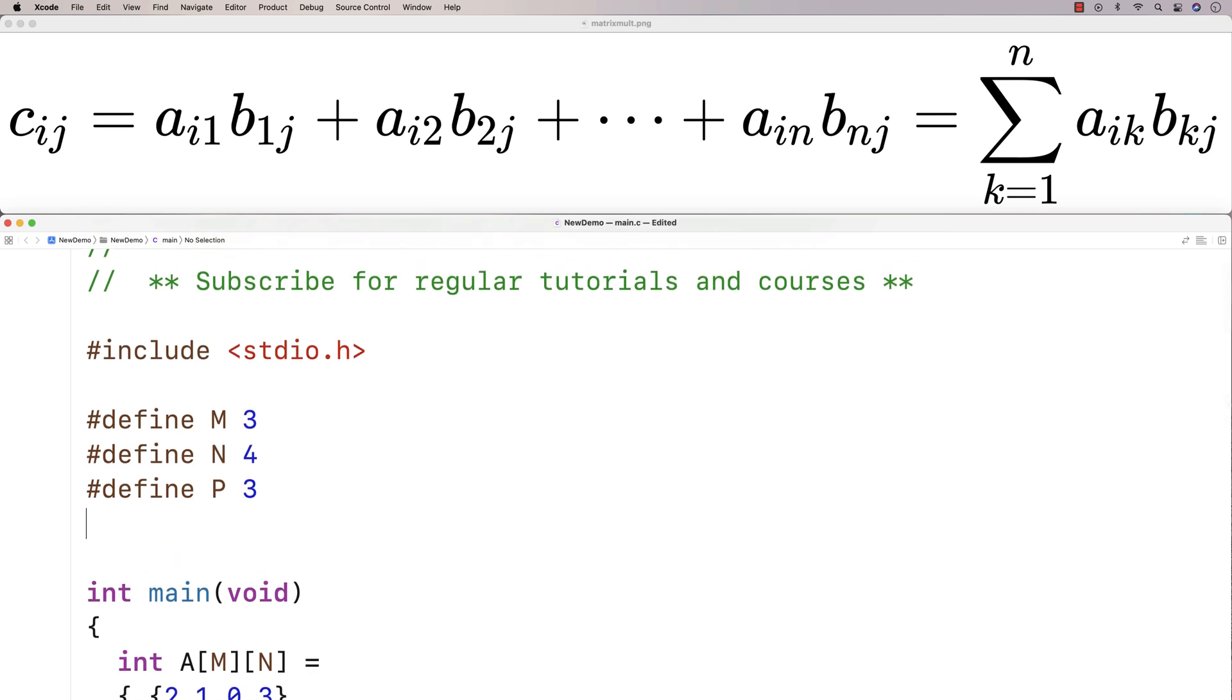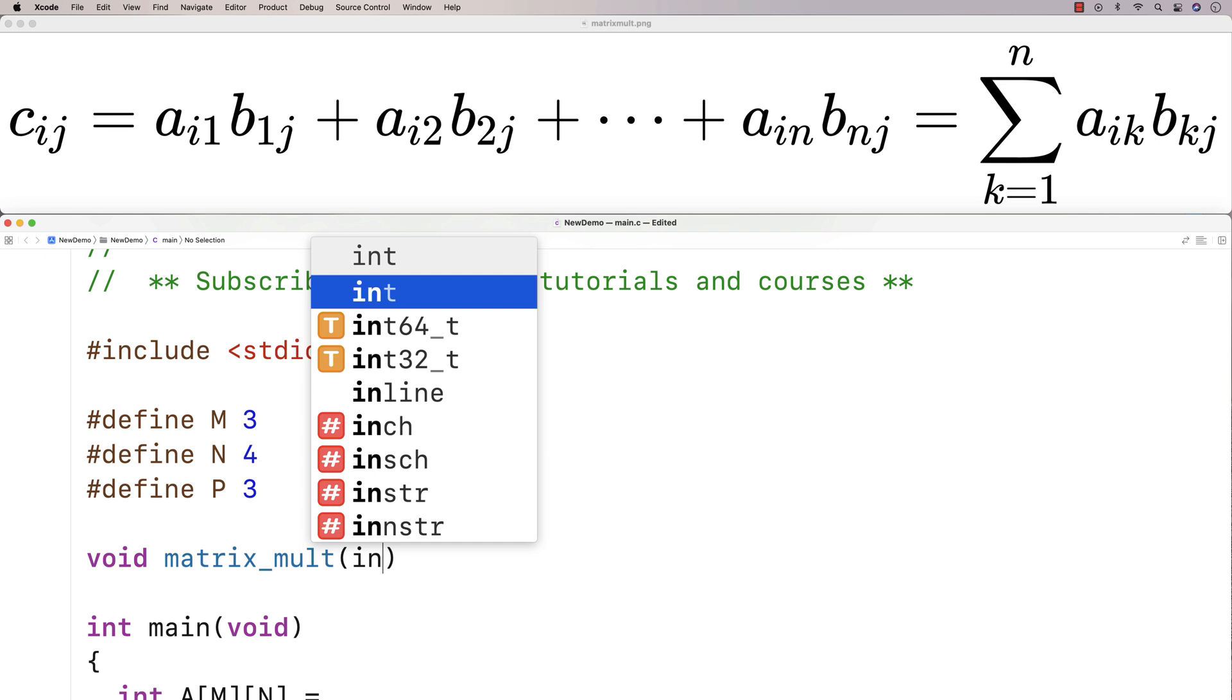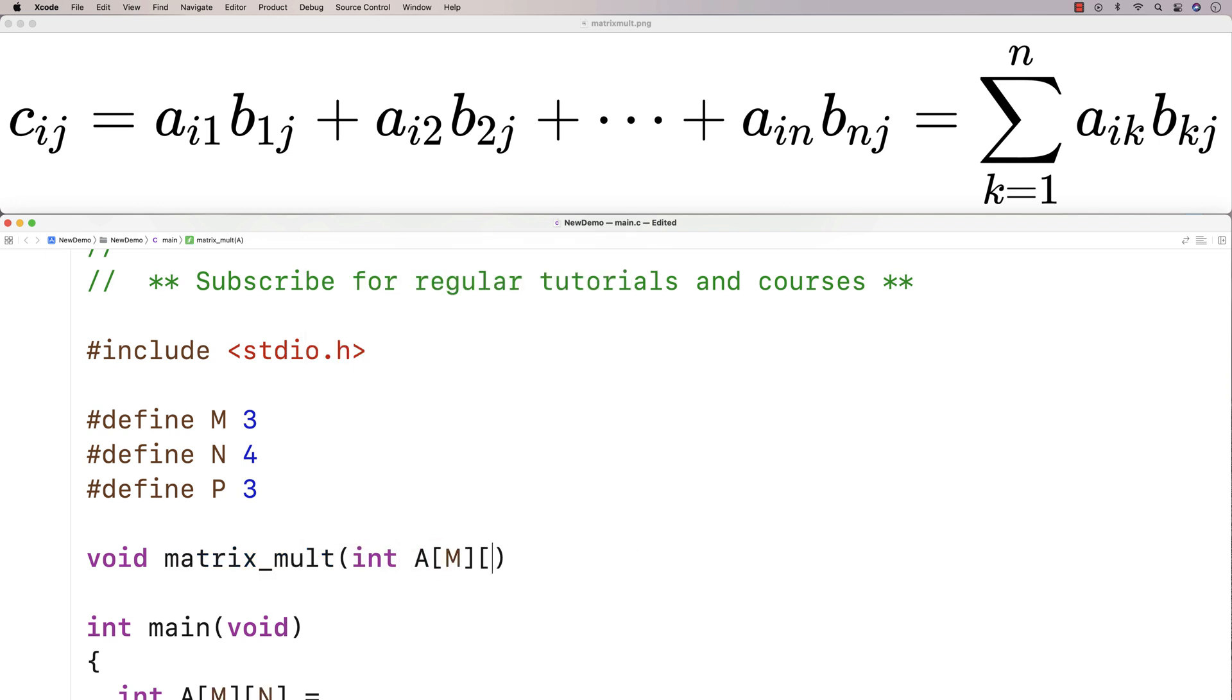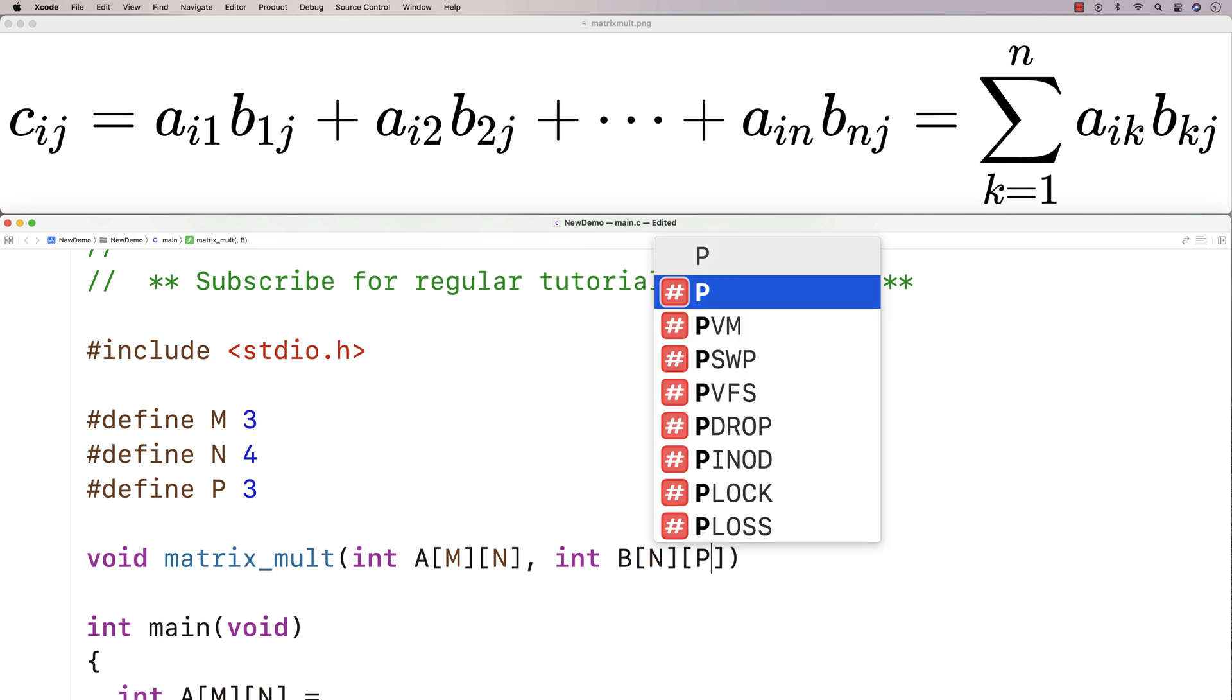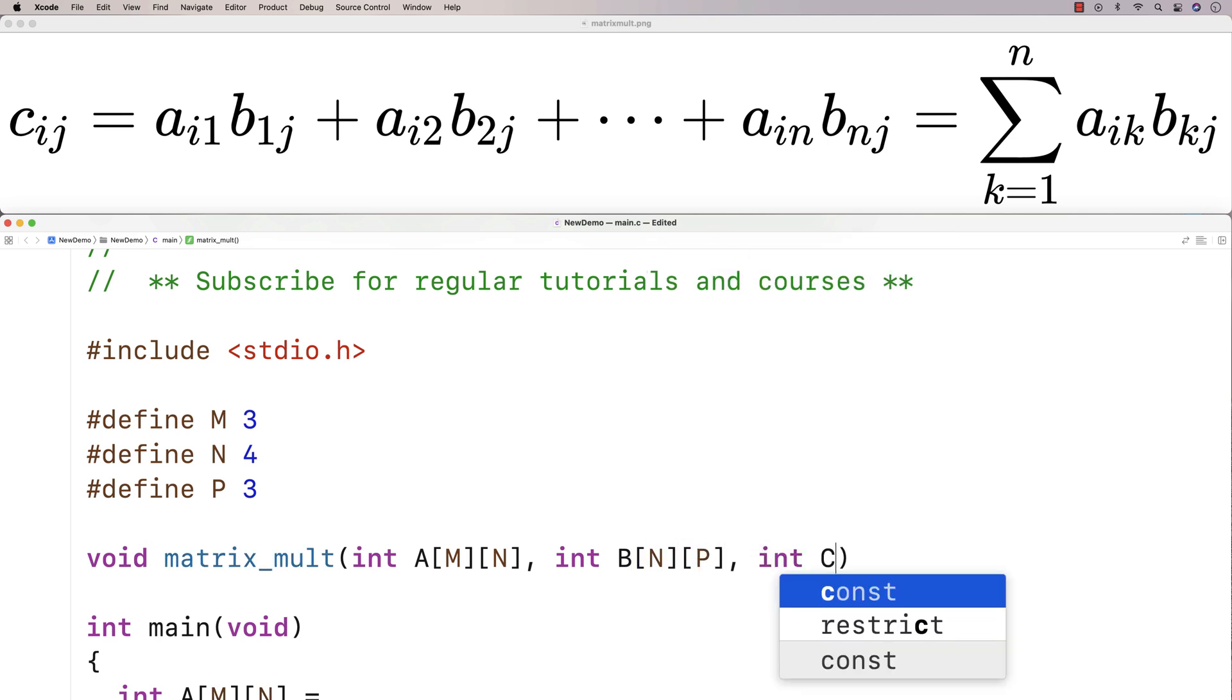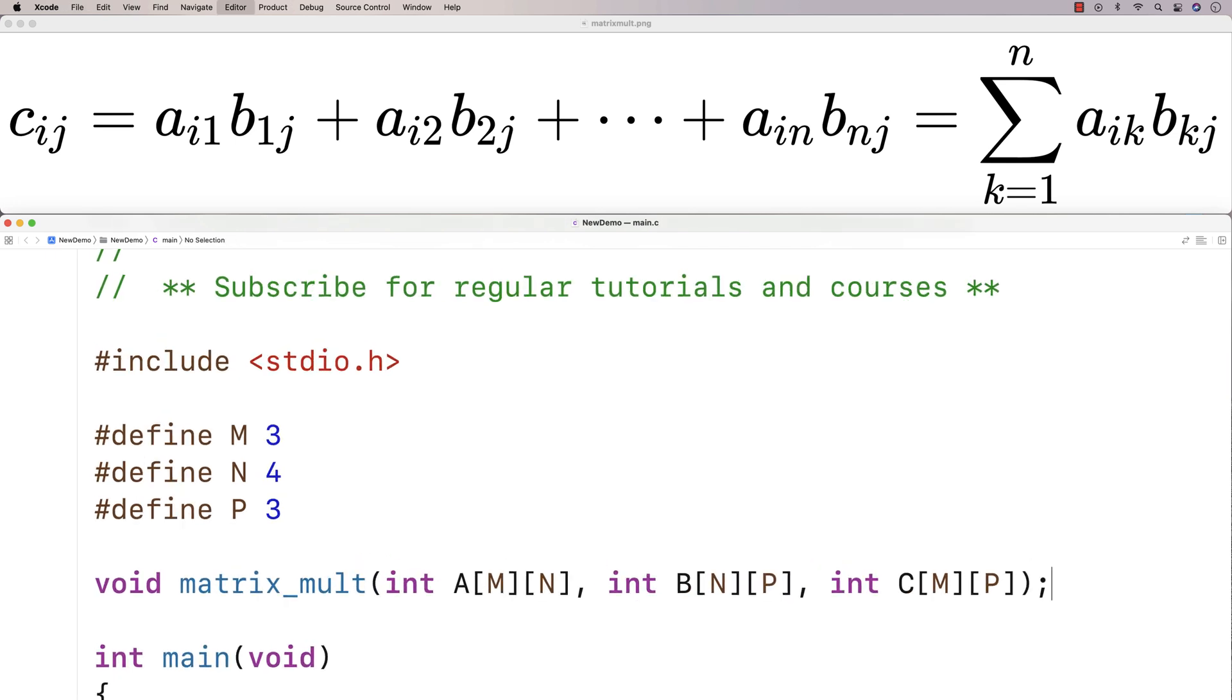So here I'll say void matrix_mult int A[M][N], int B[N][P], and int C[M][P]. And I'll make this a little bit bigger here.